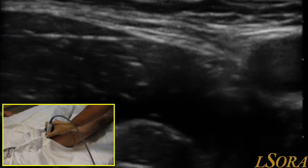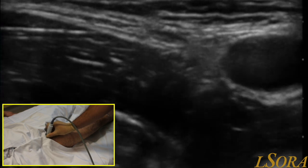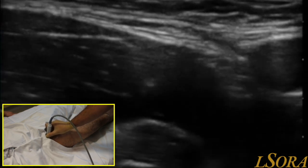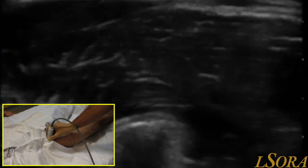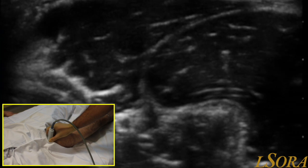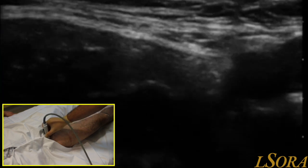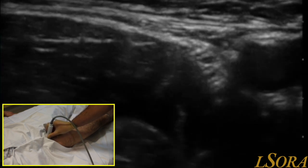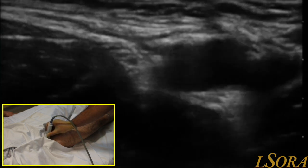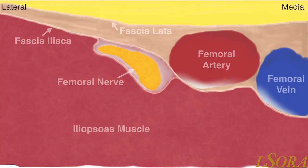With the colour Doppler now removed, the probe is slid laterally to identify the fascia of the iliacus muscle as it meets sartorius. The probe is then slid back towards the femoral vessels. At this point, probe angulation identifying the anisotropic femoral nerve allows clear identification of it, lying tightly adherent to the surface of the iliacus muscle. In this schematic overlay you can see the important structures highlighted for clarity: the superficial fascia latae, deep to that the fascia iliaca which envelopes the femoral nerve, medial to the femoral nerve the femoral artery, and more medial the femoral vein. The iliacus muscle lies deep to all structures.